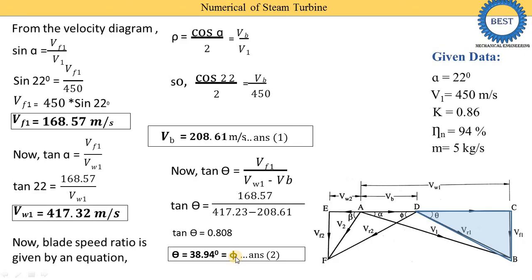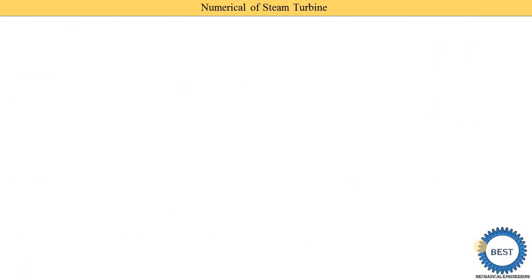Since the blades are equiangular, theta and phi are both equal to 38.94 degrees. Now we calculate Vr1 using trigonometric equations. We can use either sine theta or cos theta. Using sine theta: Vr1 equals Vf1 divided by sin theta.